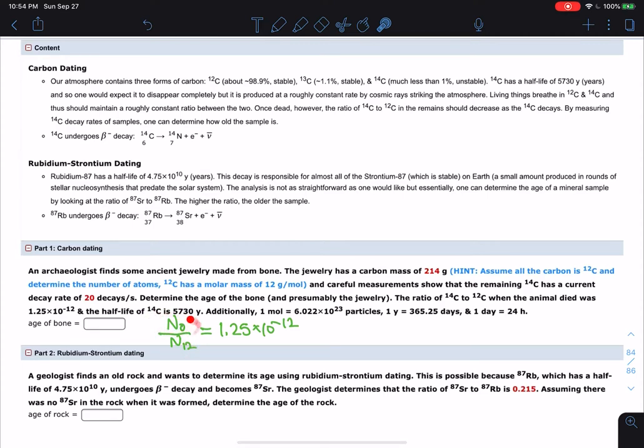And so since you've calculated this, you can determine roughly, and it turns out to be pretty accurate, you can determine how much C14 was present when the organism died. So whatever it was that's bone came from whatever animal.